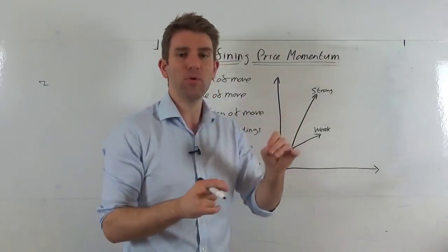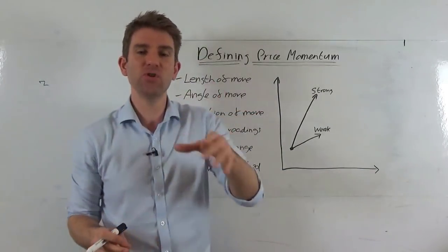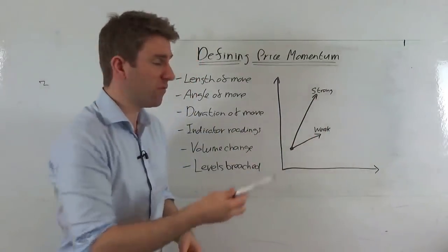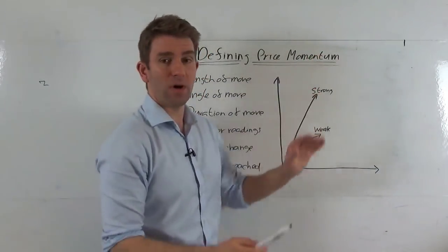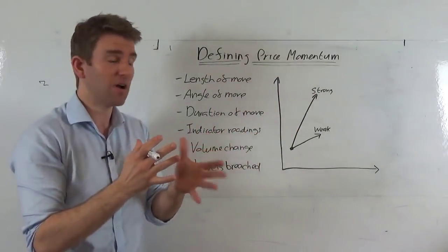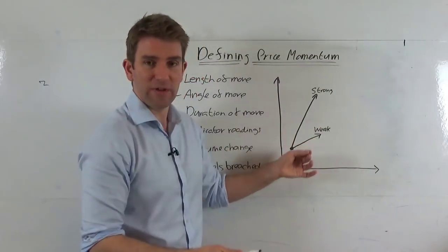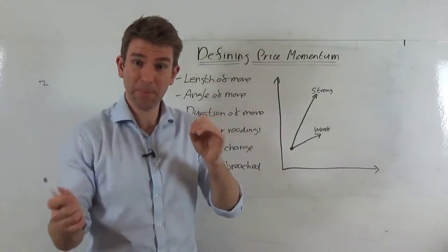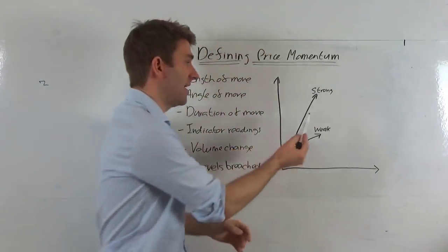Number two, the angle of the move. This is kind of related between the length and the duration, but the angle is a good way of us visually looking at the move. This is a great example of it. A strong momentum would be something that moves in a very steep angle, right up. In other words, it's moving a lot of distance, it's doing a lot of work to the upside in a very short period of time, as opposed to weak momentum, which is going to have a low angle, because it's not doing a lot, it's not moving a lot, and it's taking a long time to do it. We want to see duration of the move as short as possible. The perfect momentum is big price excursion, very short amount of time, and that is going to translate to a different angle.